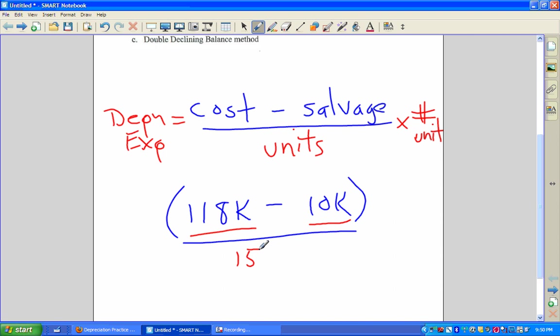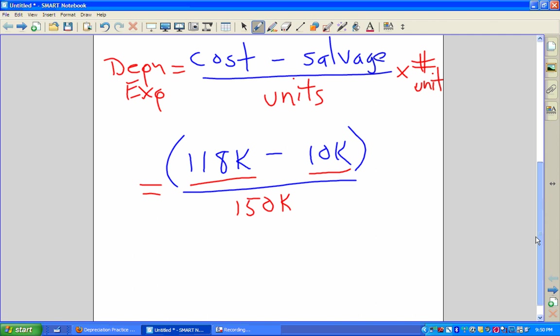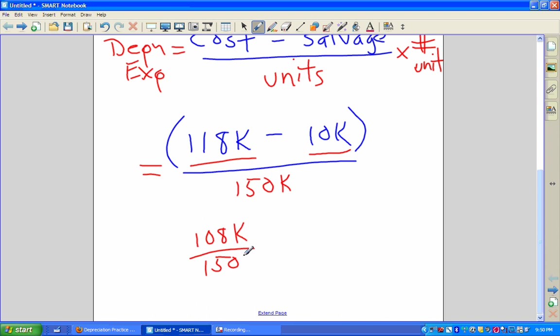So really what this comes out to be here is we're going to get that 108k divided by 150k. And so we're going to come up with a number here that is very unique. And what that means is we have to know what that number is because it's going to be an ugly decimal.